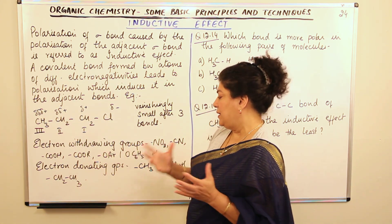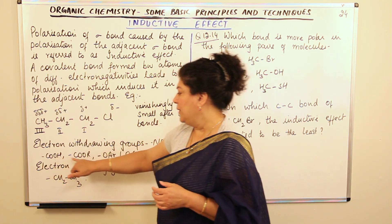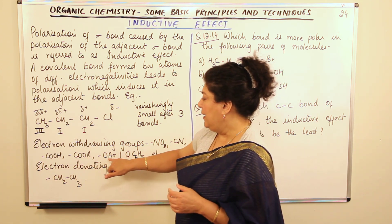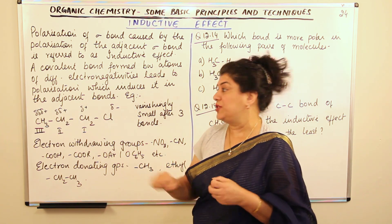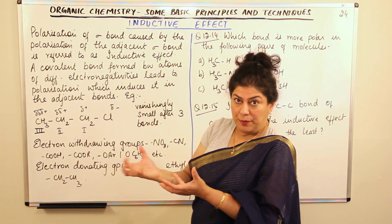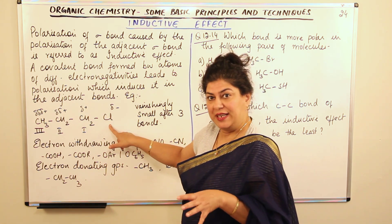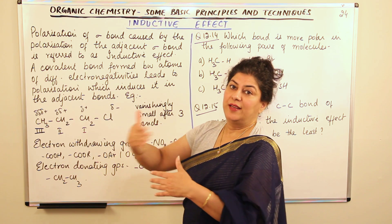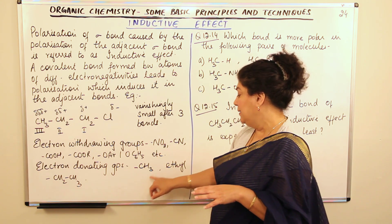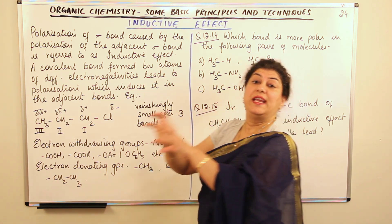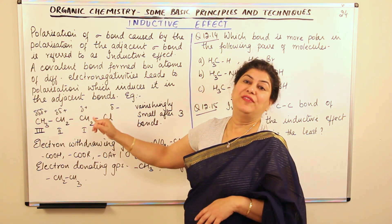Electron withdrawing groups — such as the nitro group, the cyanide group, the carboxylic acid group, the ester group, and the aryloxy (e.g., phenoxy) group — pull electrons towards themselves, creating a negative charge on themselves and a positive charge on the carbon, so the induction is of positive charge. Electron donating groups — such as methyl and ethyl — push electrons away from themselves, causing induction of negative charge along the chain.